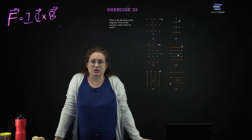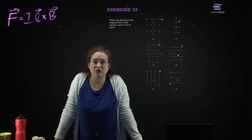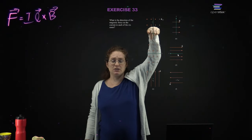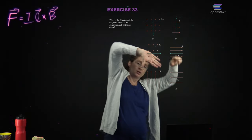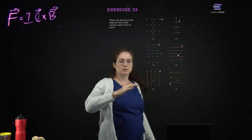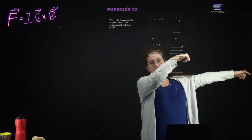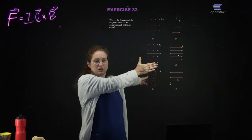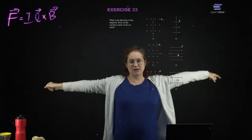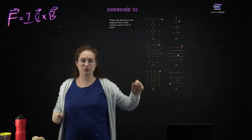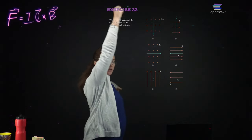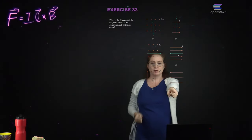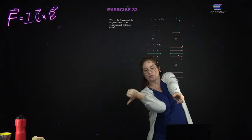Now we're going to go through some examples with currents. What is the direction of the magnetic force on the current in each of the six cases? Current and magnetic field — force is that way. Current up, magnetic field that way — force is towards me. Current, magnetic field — force is up. Current and magnetic field are anti-parallel — the force is zero. Current, magnetic field — V cross B is that way. Current, magnetic field — V cross B is down.